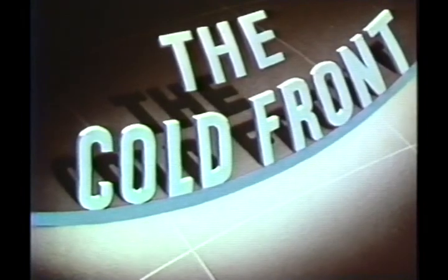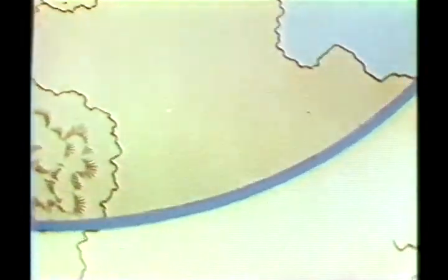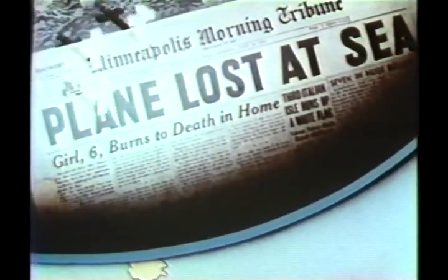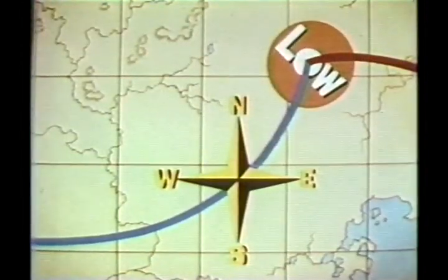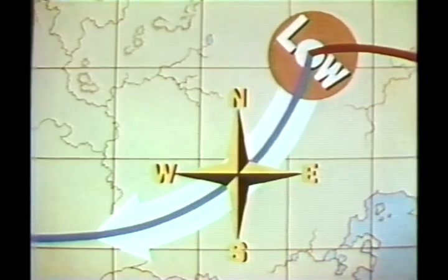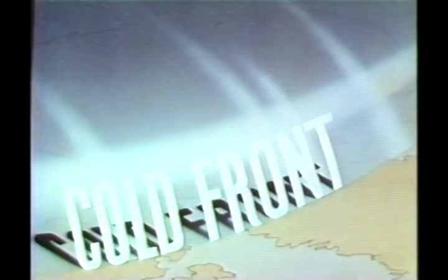This film is about the blue cold frontal line on the surface weather map. It looks harmless, but the violent weather it represents takes many lives every year. These tragedies can be avoided if the proper flight procedures are used when cold frontal weather is encountered. A typical cold front extends from the center of a low-pressure area in a general southwesterly direction. The blue line represents the leading edge of a mass of cold air.